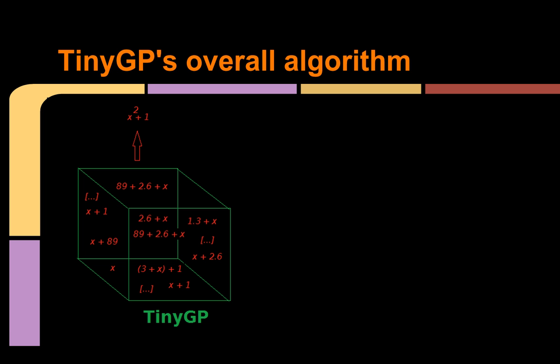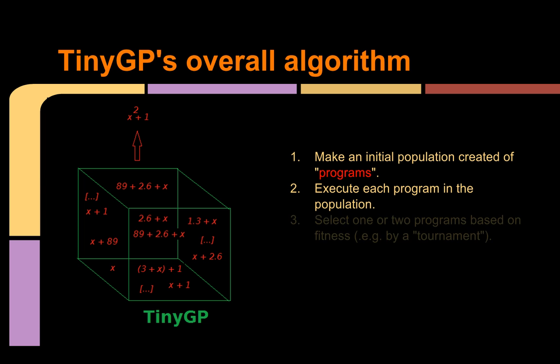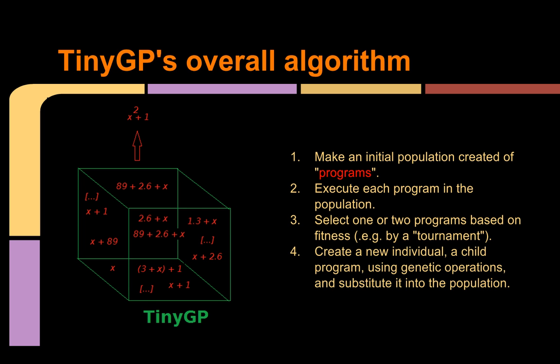We can give a bit more algorithmic description of this process in six steps: 1. Make an initial population created of programs. 2. Execute each program in the population. 3. Select one or two programs based on fitness, for example by a tournament. 4. Create a new individual, a child program using genetic operations, and substitute it into the population. 5. While no acceptable solution go to 2. 6. Otherwise return best program found.